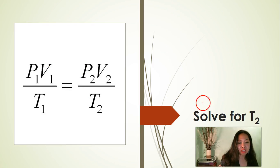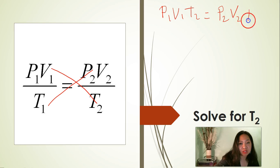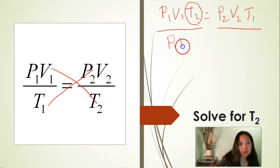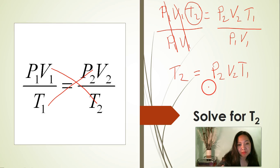Now we are solving for T2. First step: cross multiply. P1 times V1 times T2 is equal to P2 times V2 times T1. Divide both sides of the equation by P1 times V1 in order to isolate T2. Cancel P1, cancel V1. That leaves us with the final temperature formula: P2 times V2 times T1 divided by P1 times V1.